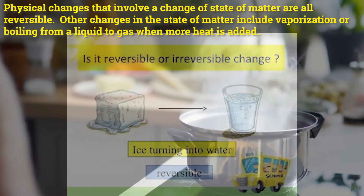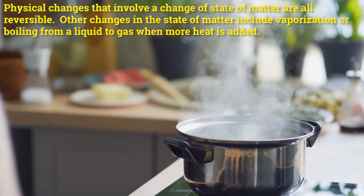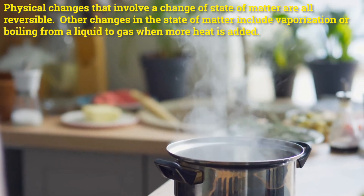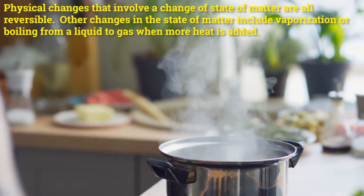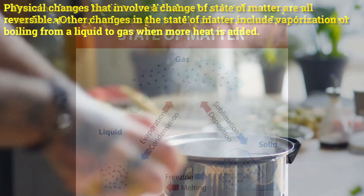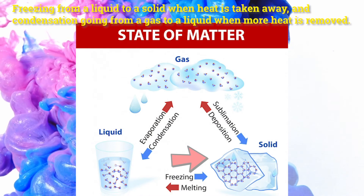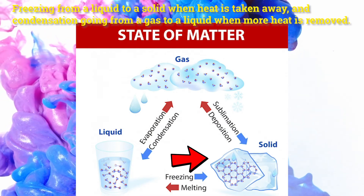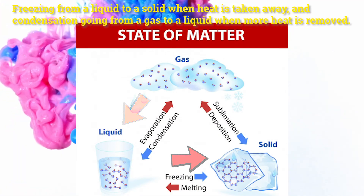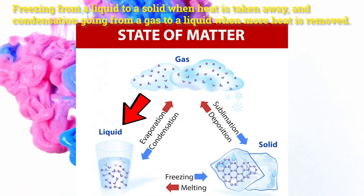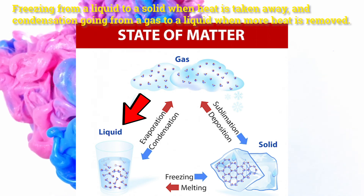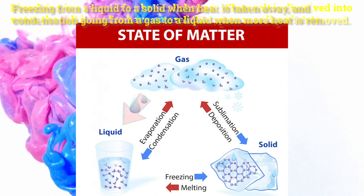Other changes in the state of matter include vaporization or boiling — going from a liquid to a gas when more heat is added — freezing from a liquid to a solid when heat is taken away, and condensation going from a gas to a liquid when more heat is removed.